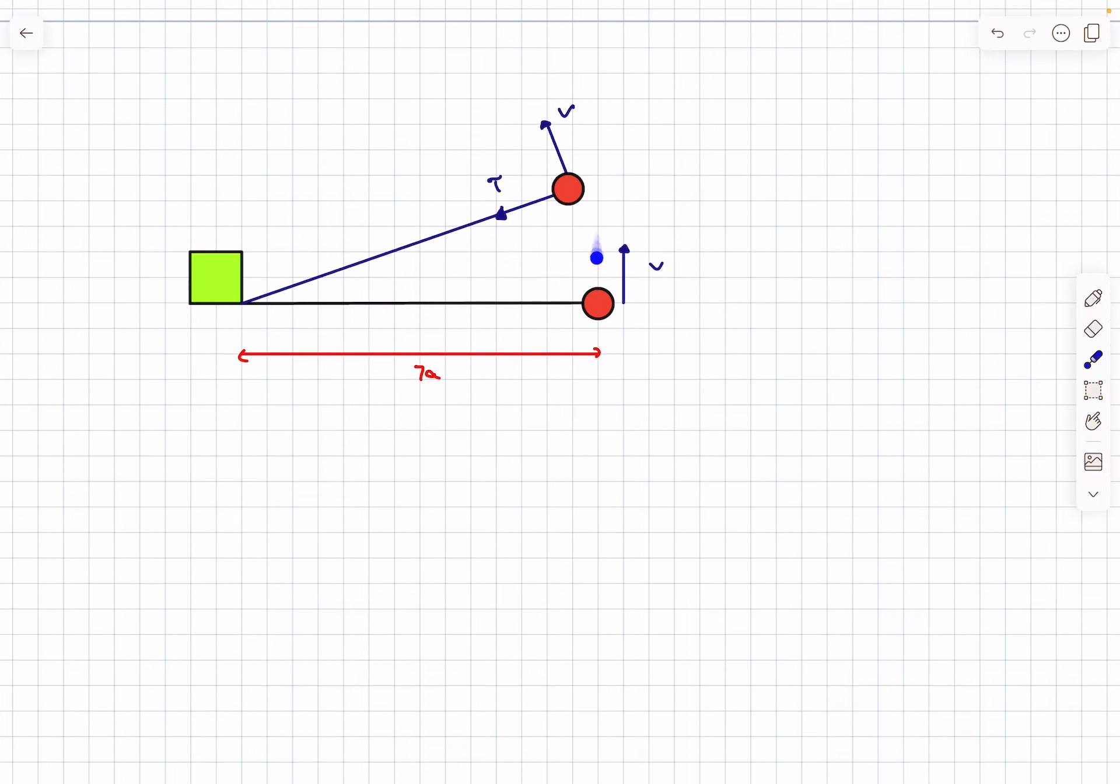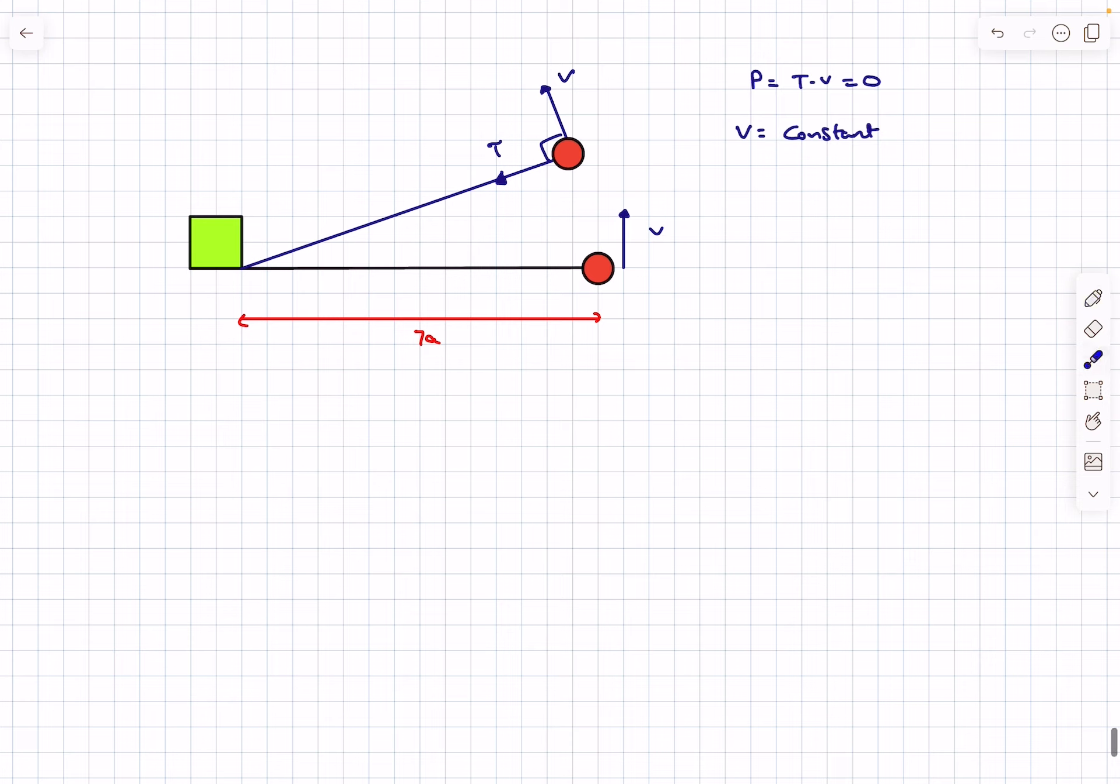As the mass performs circular motion, one thing is certain: the instantaneous velocity and string tension are perpendicular at all times, which means the instantaneous power delivered by tension, T·v, is zero. Hence tension performs no work on the mass, and by work-energy theorem, the velocity remains constant. This makes the problem simply uniform circular motion.